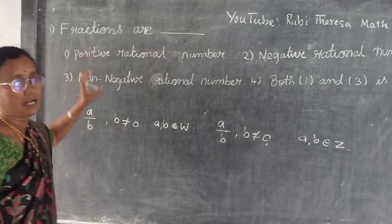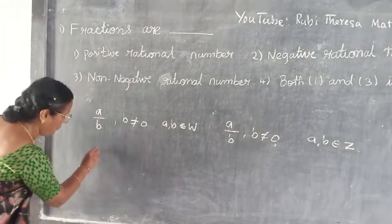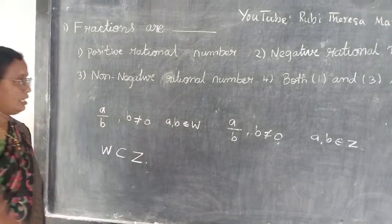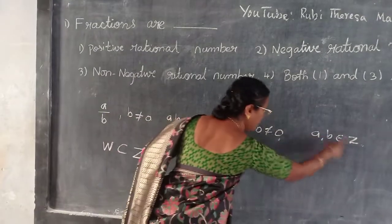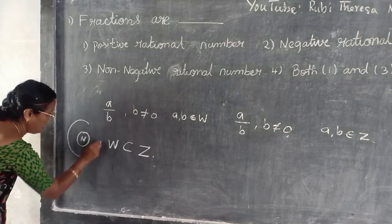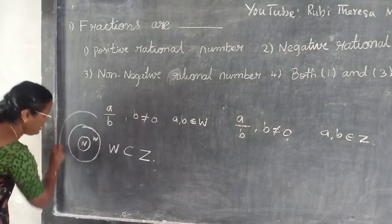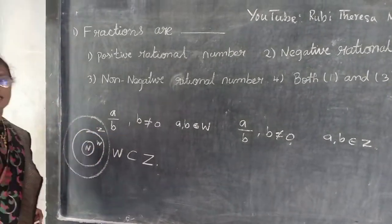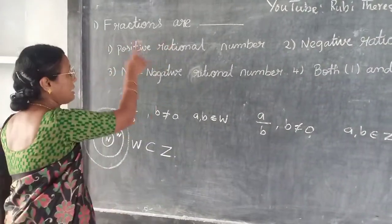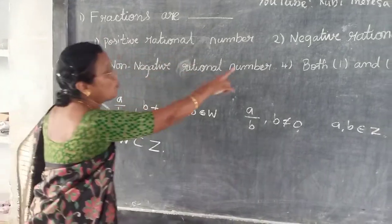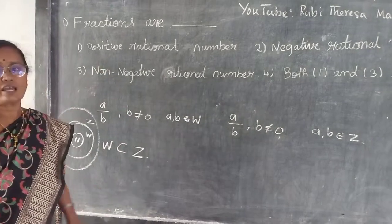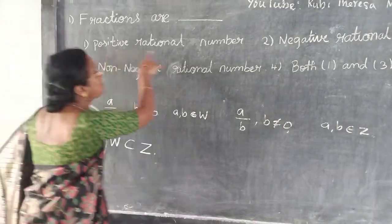W is a subset of integers. Now, what are the integers? Integers include whole numbers and negative numbers. Most students are choosing positive rational number as their answer — but that is not correct.